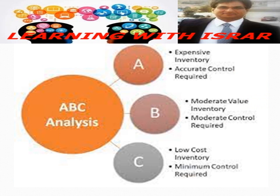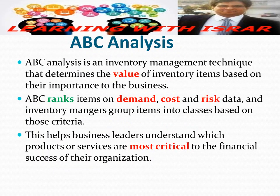In ABC analysis, we divide or separate our inventory into three parts. The first is the most expensive inventory, which needs accurate control. The second is moderate value inventory, requiring moderate control. The third is low-cost inventory, which requires minimum control. Basically, the first step is dividing our inventory into three major parts according to their requirements, value, or need.